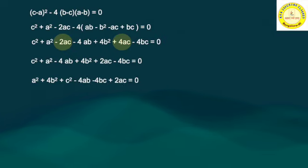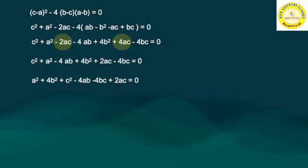Writing all terms in alphabetical order: a² is the first term, 4b² is the second term, c² is the third term. These are the quadratic terms. Then the linear cross terms: minus 4ab, minus 4bc, plus 2ac, all equals 0.